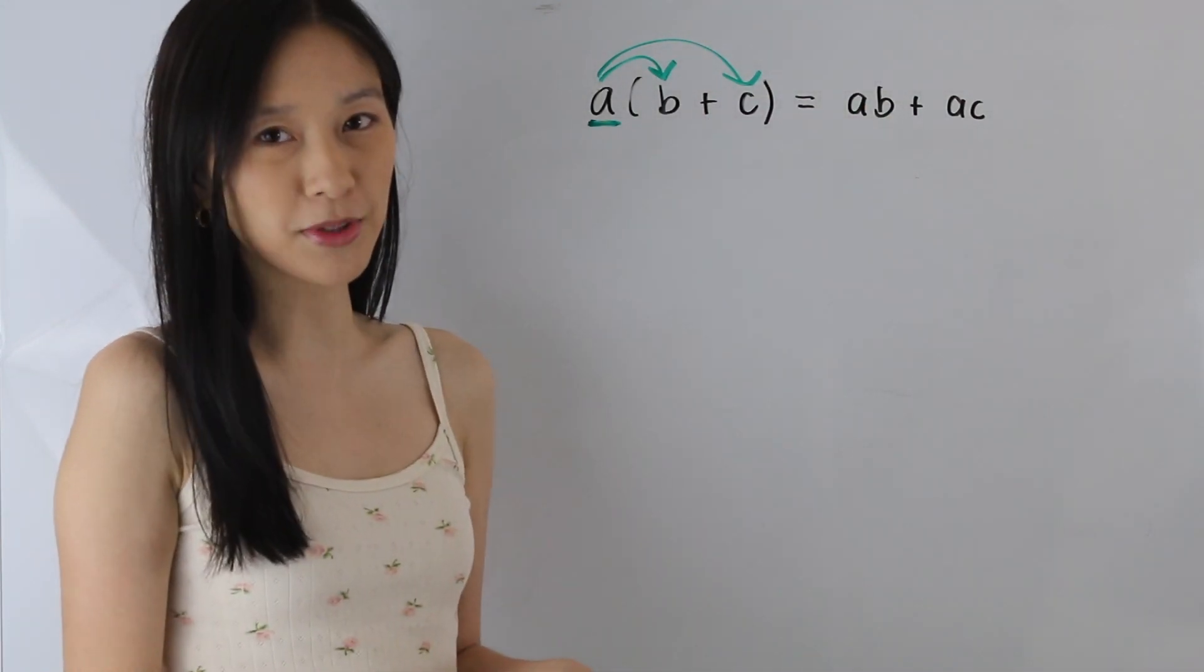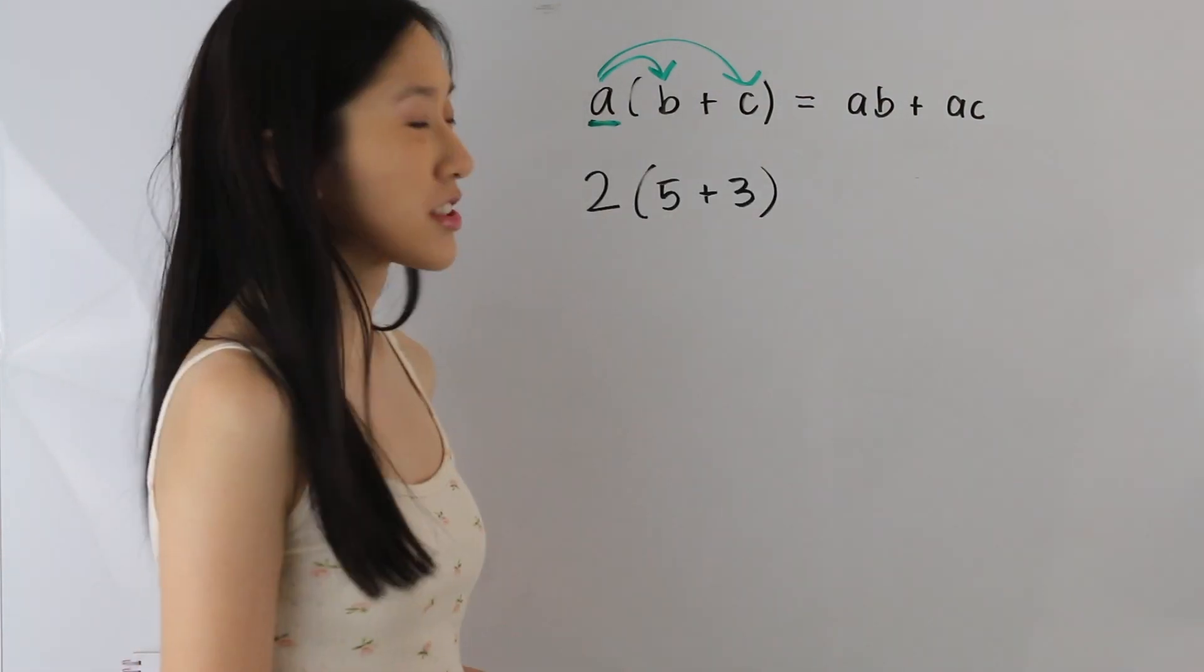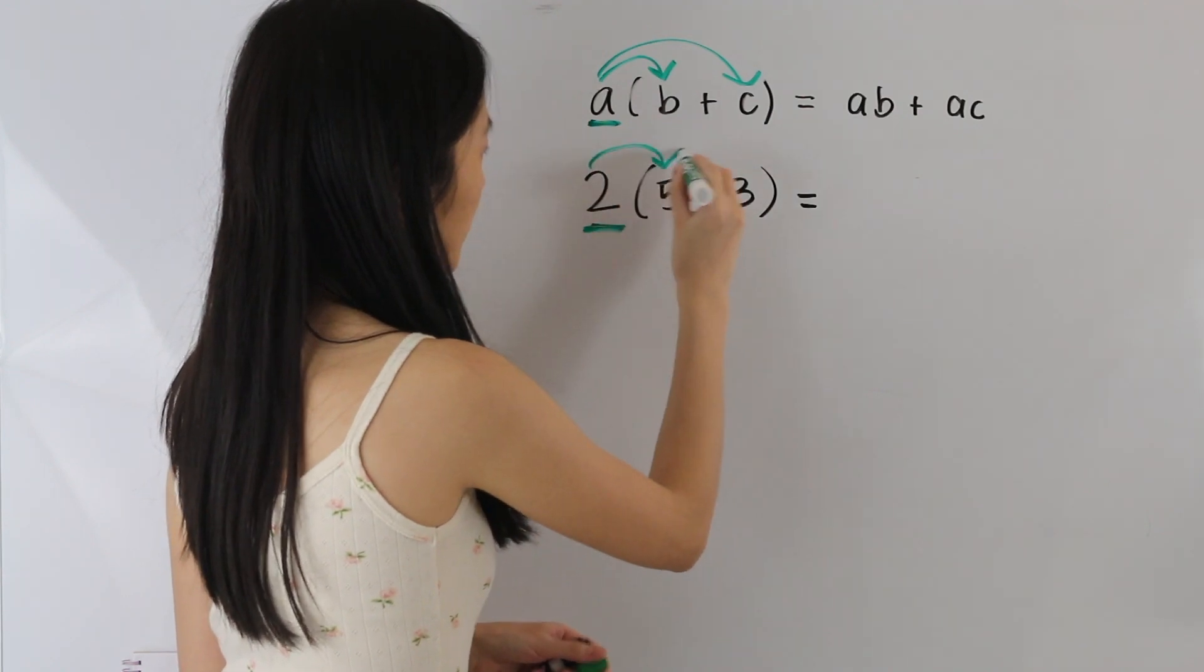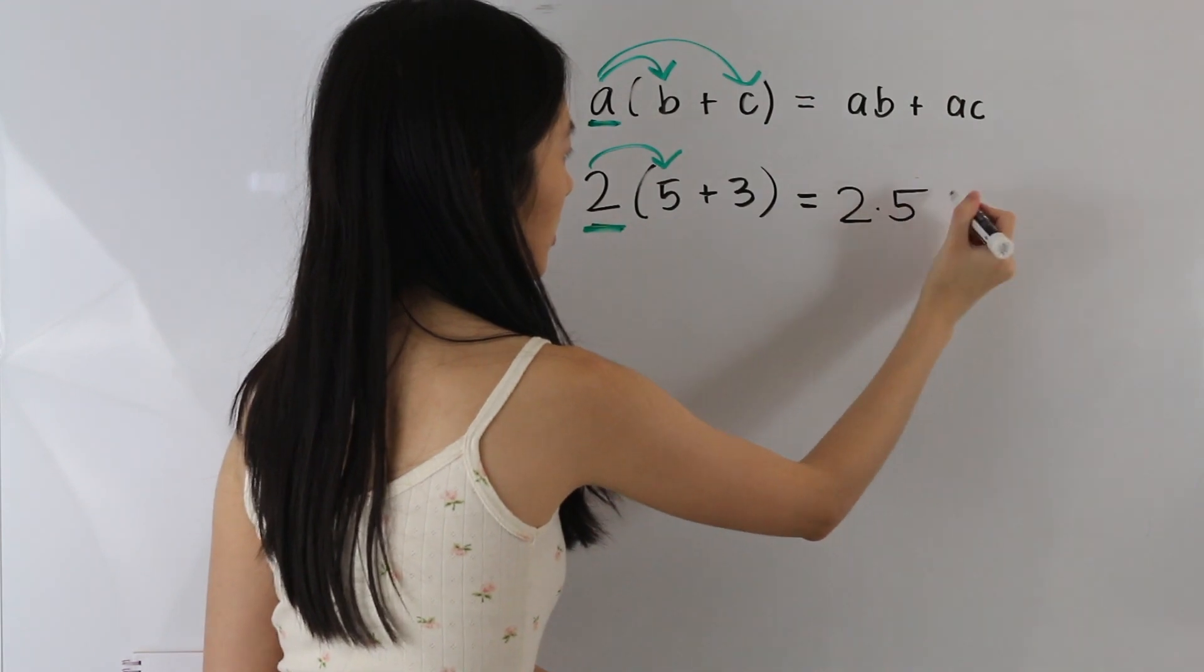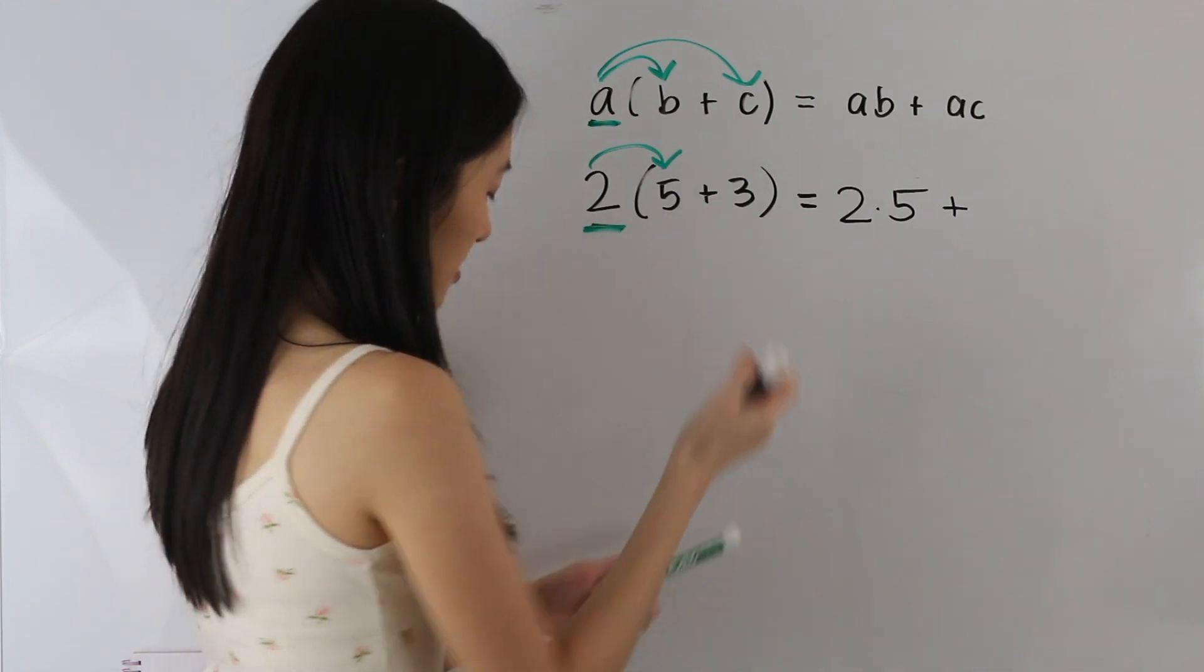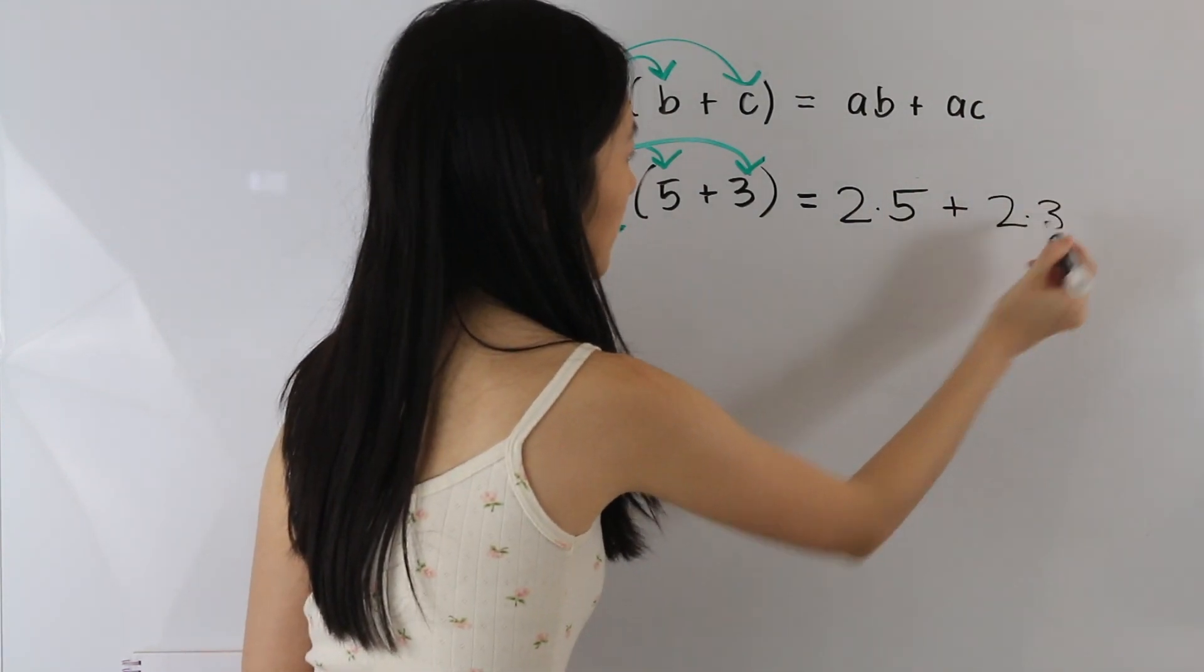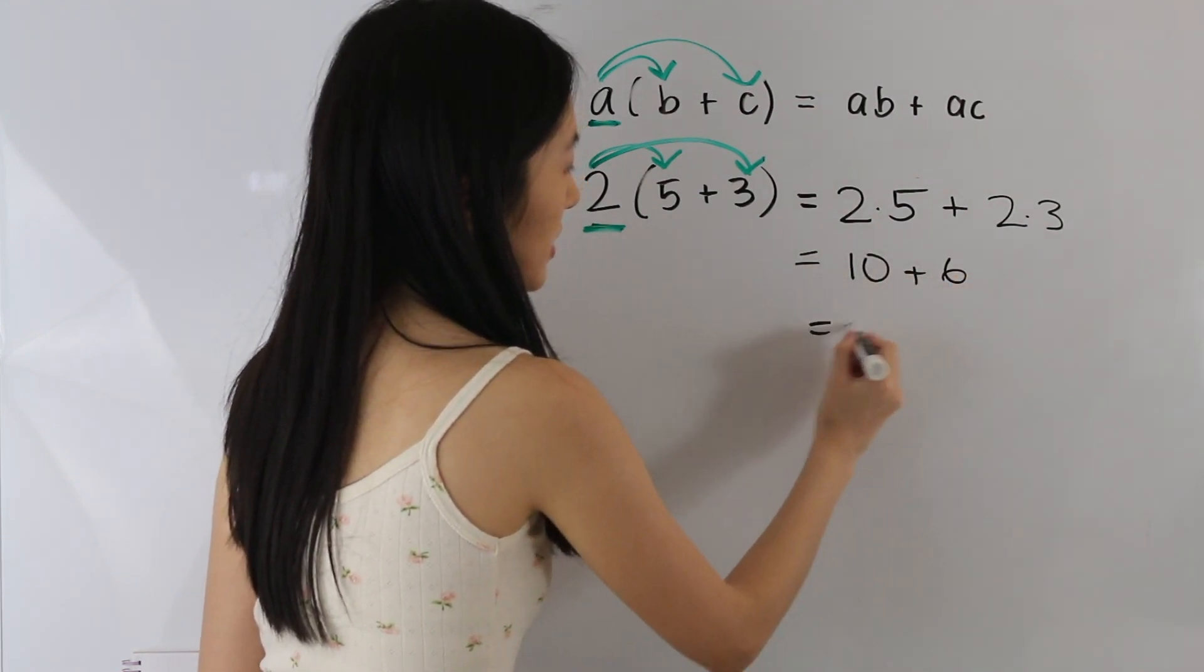So let's go ahead and take a look at a few examples. So in this example here, we have 2 times 5 plus 3. So we are going to start off by multiplying this 2 outside by the 5. And so we have 2 times 5. And then we have a plus sign here because this is a plus. And then next, we are going to multiply the 2 by the 3. And so we have 2 times 3. And then simplifying this, we have 10 plus 6, which is equal to 16.